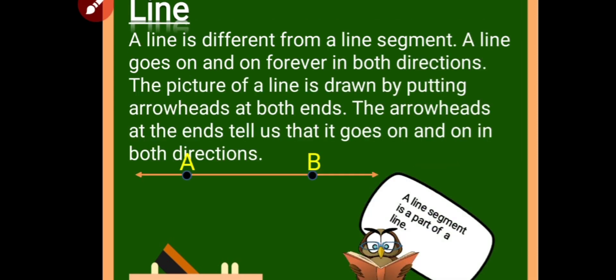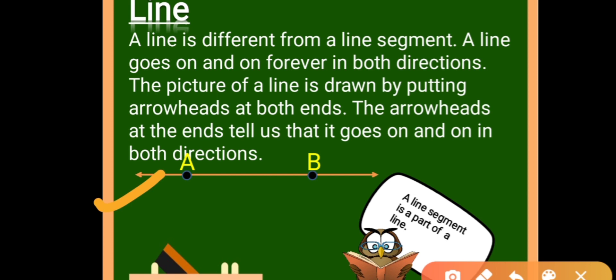What is a line? A line is different from a line segment, so don't confuse between them. A line goes on and on forever in both directions. The picture of a line is drawn by putting arrowheads at both ends, and I have drawn two points over here — A and B.